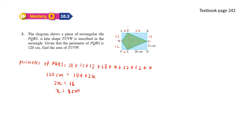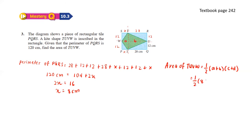Now that we know x equals 8, we can find the area of TUVW. The formula for a kite is one half times the sum of diagonal A and B times the sum of diagonal C and D. So we have one half times 8 plus 28, times 12 plus 12. That gives one half times 36 times 24, which equals 432 cm squared.